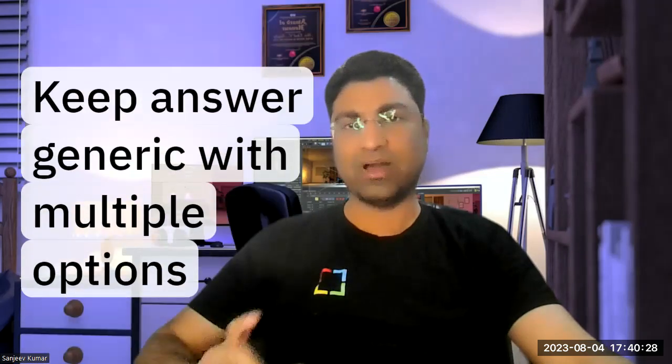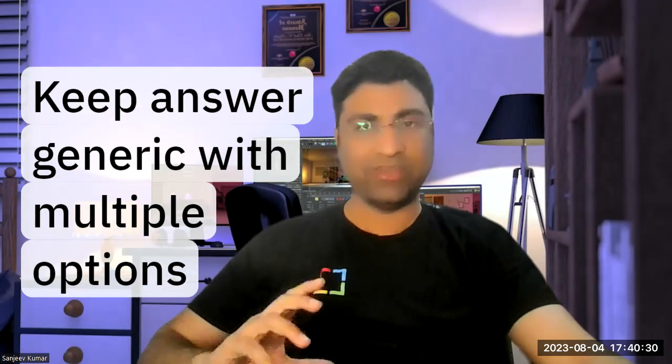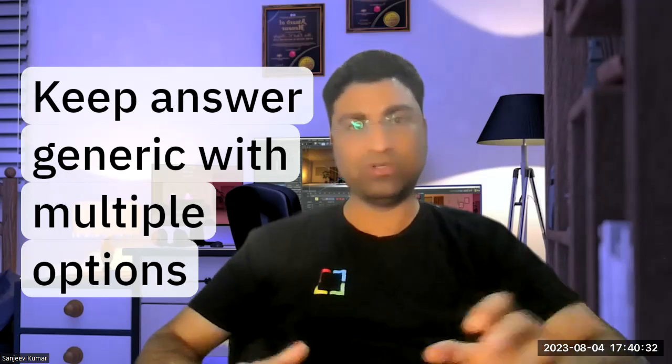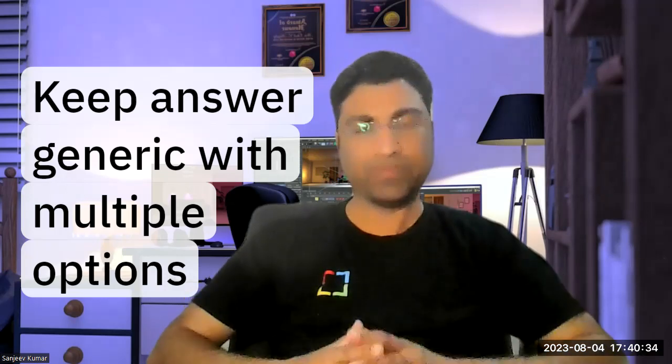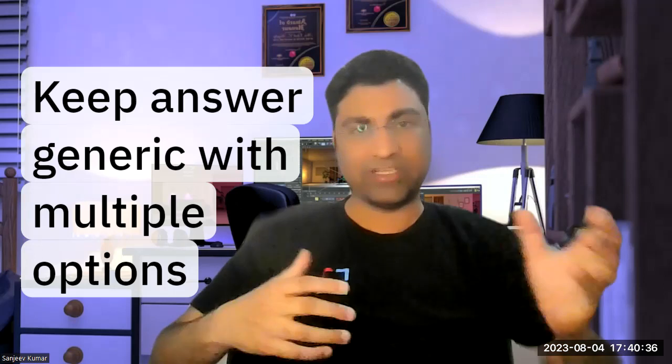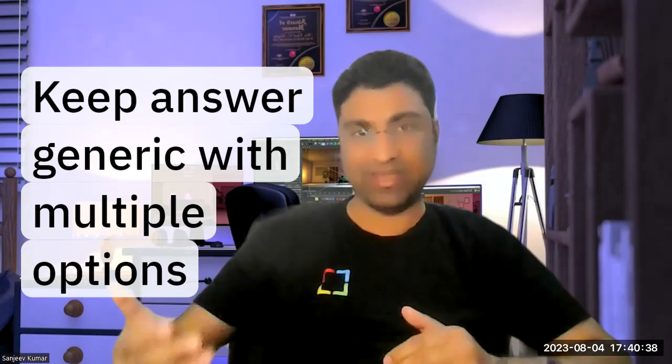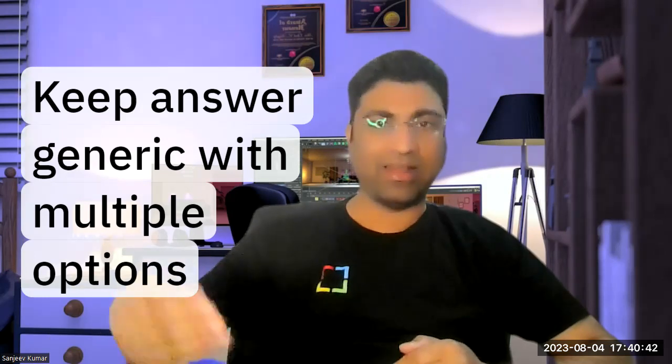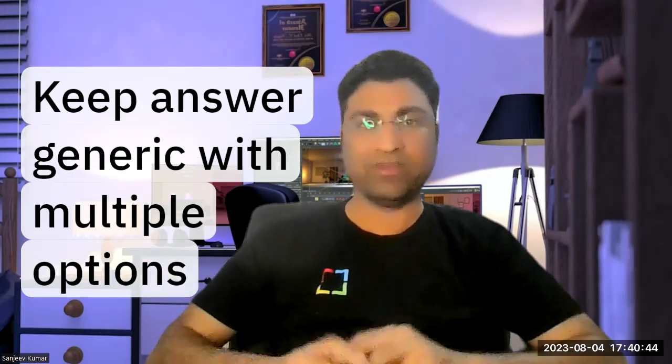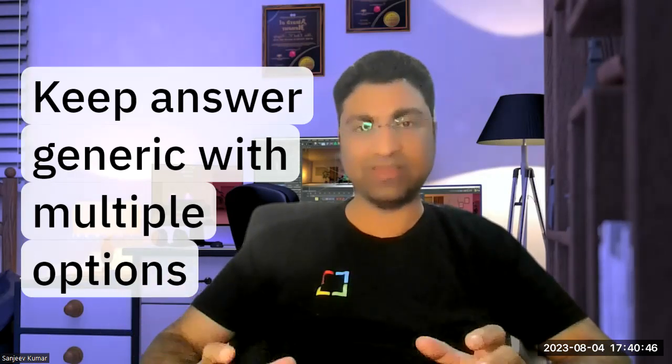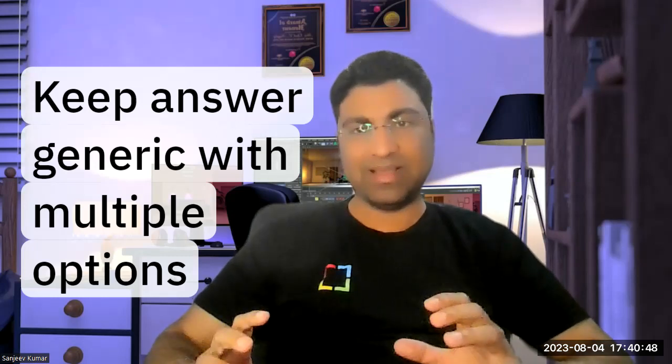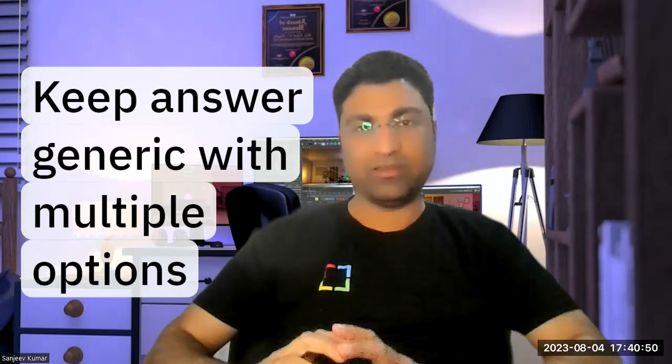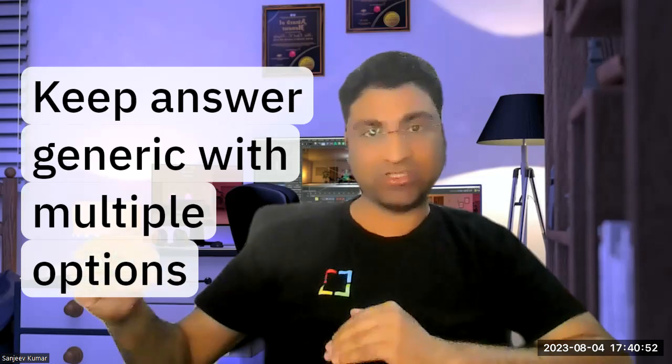Then you start to answer the question. When you're trying to answer, don't say this is exactly what you do. Say that from your experience, you think there are multiple things that can be done for this kind of question. You will analyze these two or three options and then you will zero down on one specific thing. Try to give them a generic answer that these are the multiple options possible.